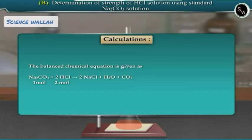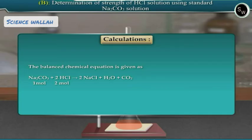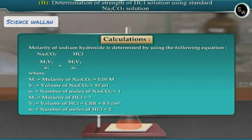Calculations: the balanced chemical equation shows that 1 mole of sodium carbonate reacts with 2 moles of hydrochloric acid to give 2 moles of sodium chloride, carbon dioxide, and 1 mole of water. The molarity of hydrochloric acid is determined using: M₁V₁/n₁ = M₂V₂/n₂, where M₁ = molarity of sodium carbonate = 0.05 molar, V₁ = volume of sodium carbonate = 10 ml.